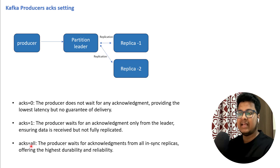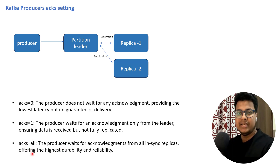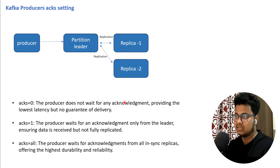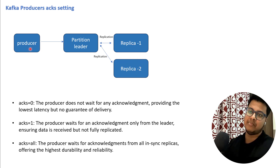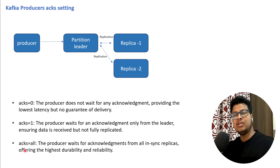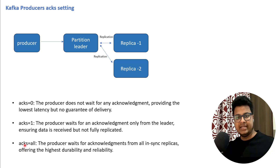There is one more setting: acknowledgement all. The producer awaits acknowledgement from all the in-sync replicas, offering the highest durability and reliability. It will be the slowest because once the data is written to the partition leader, it has to be replicated to all its replicas, and the producer cannot carry on until the data gets replicated and acknowledgement is received back. This is a setting you can configure at the producer level, and when we discuss the code, I'll explain how to set this up and how to wait for the acknowledgement.